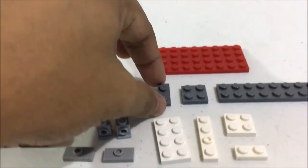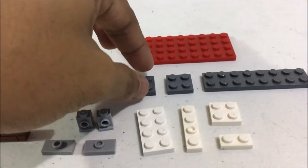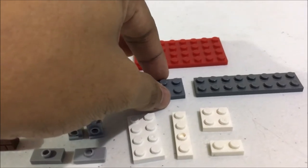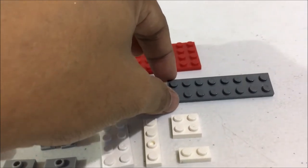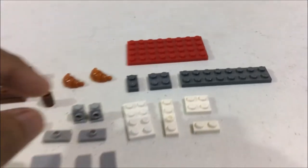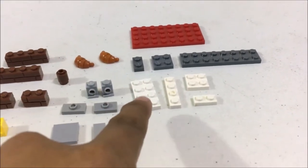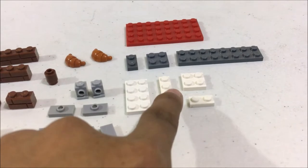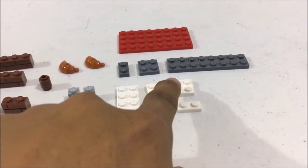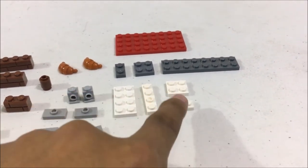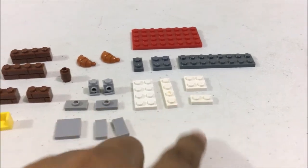One 1x2 gray plate, one 2x2 plate, and one 2x8 plate. For the white plates you need two 2x4 plates, one 1x4 plate, one 2x2 plate, and one 1x2 plate.